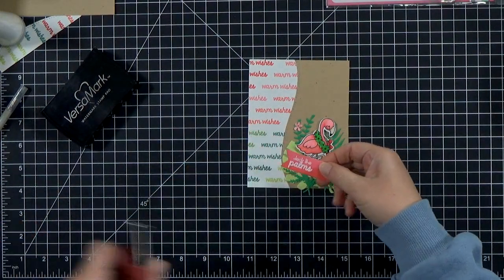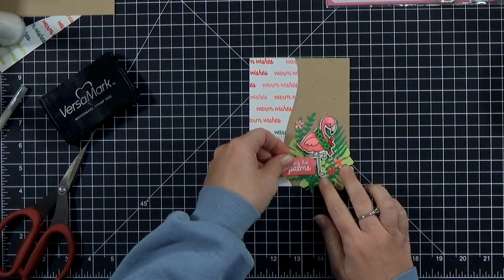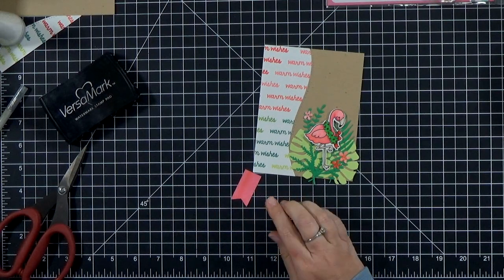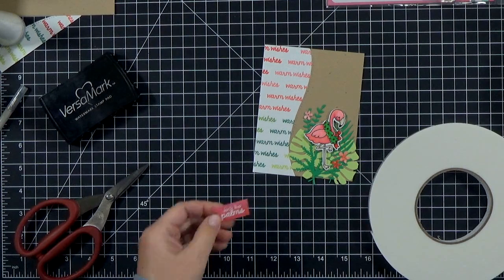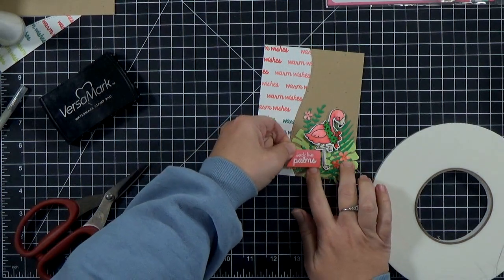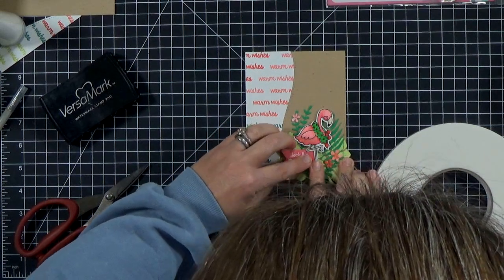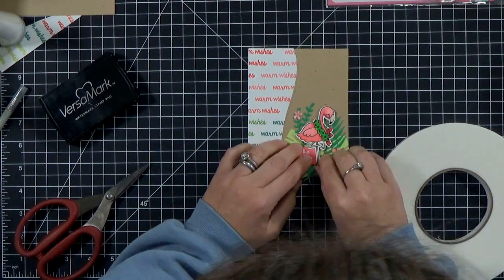So I just kind of eyeballed where I want it to be, trimmed it down. And then I'm going to pop this up too so that it's the same height as the flamingo. So I'll just put a little more foam tape behind here. And then I can stick it in place. And forgive my head it's in the way, but I was trying to line it up so that the edge is parallel to the bottom of the card.